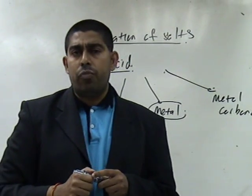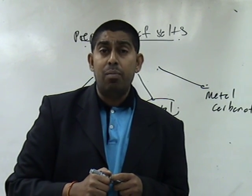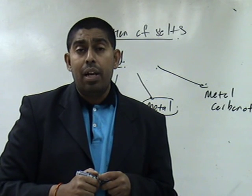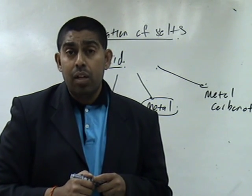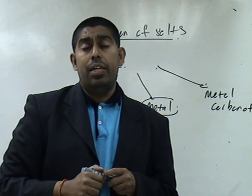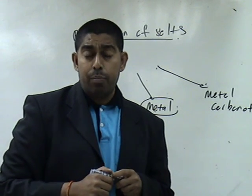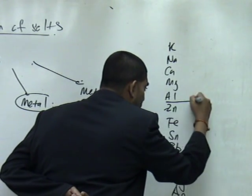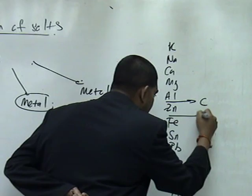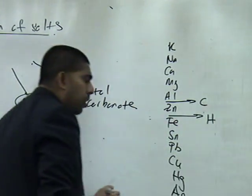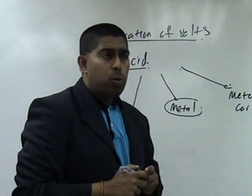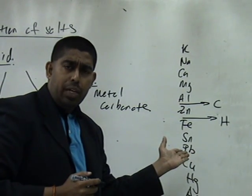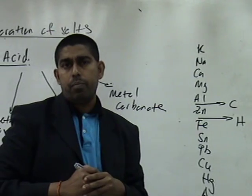This is metal reactivity series. I repeat again, students, for you. Potassium, sodium, calcium, magnesium, aluminium, zinc, iron, tin, lead, copper, mercury, silver, gold. So, this is metal reactivity series. In this metal reactivity series, carbon is positioned at this point here. Carbon. And hydrogen is located at this point here. Can you see that, student? Also, carbon and hydrogen are not metal, but they are also put into the metal reactivity series.